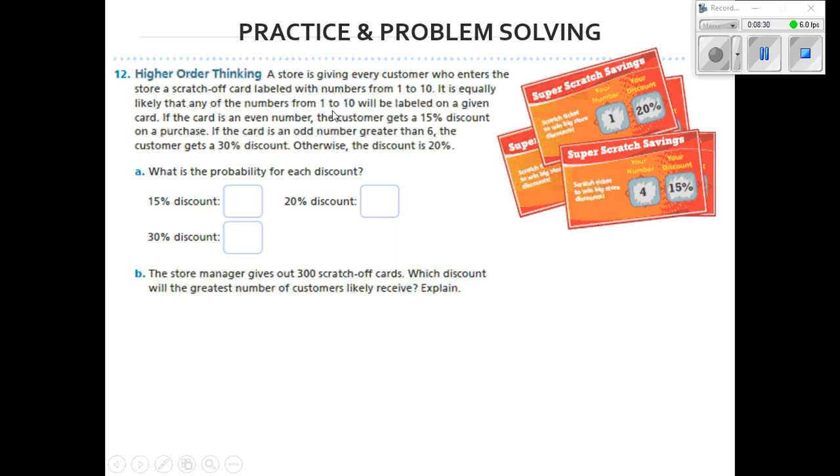It says higher-order thinking. A store is giving every customer who enters the store a scratch-off card labeled with numbers from 1 to 10. It is equally likely that any of the numbers from 1 to 10 will be labeled on a given card.